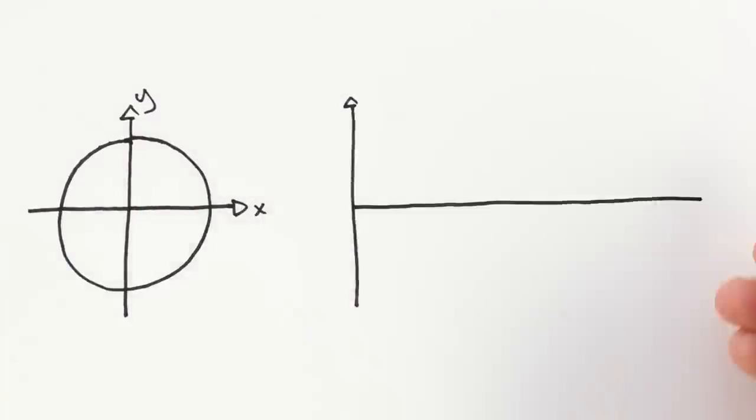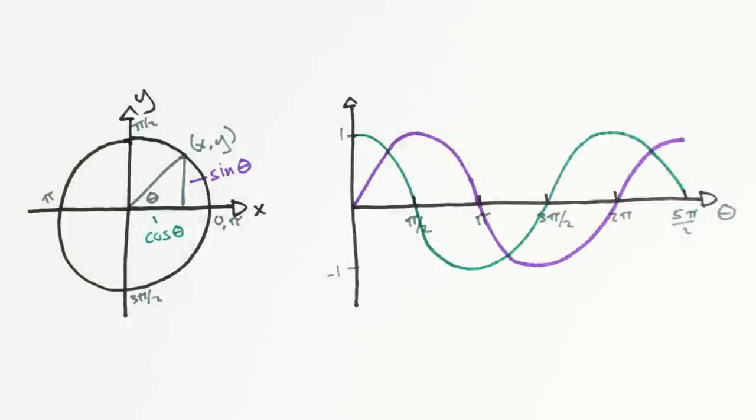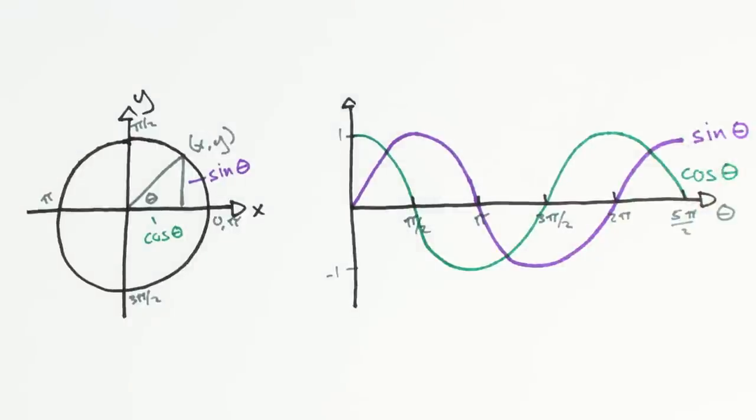Depending on how thoroughly you learn trigonometry, you may already know that we have special names for the functions that result from projecting circles into a single dimension. The official names for these functions are sine and cosine. Cosine gives the x value as we move around the unit circle, and sine gives the y.